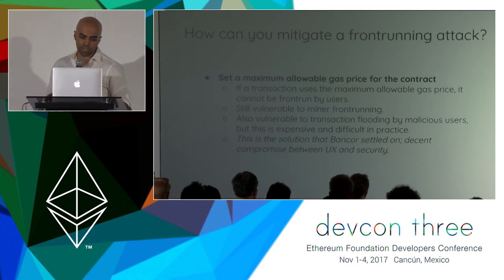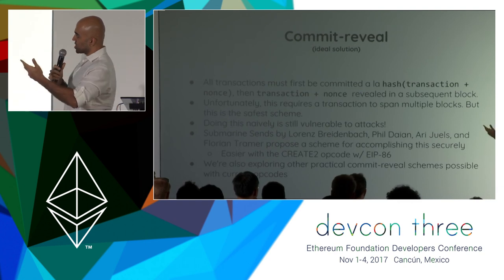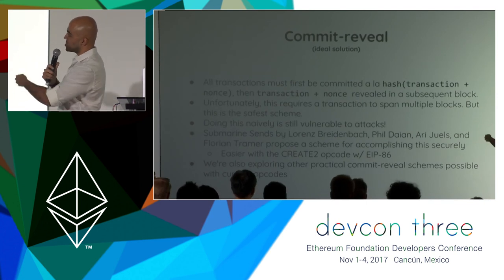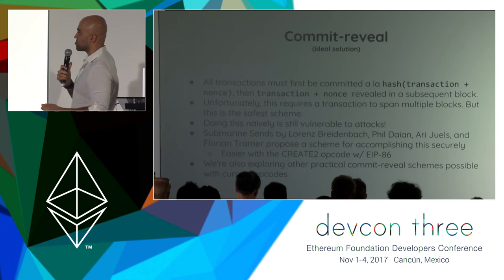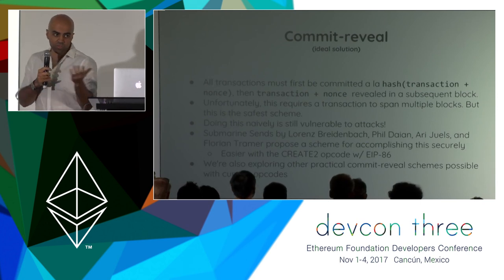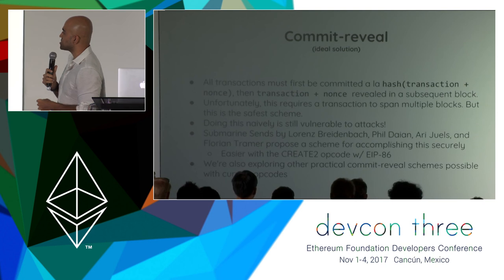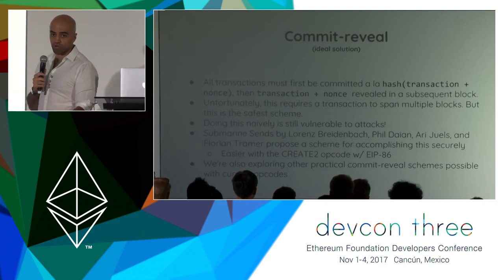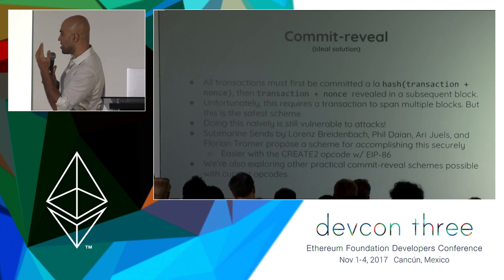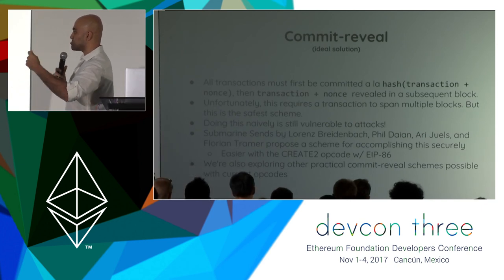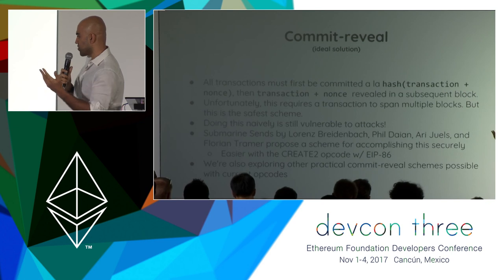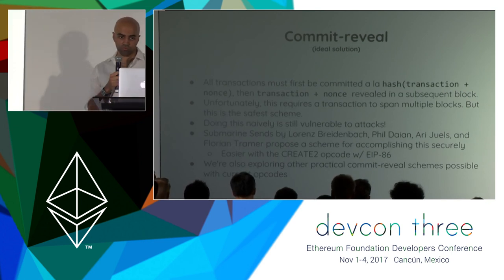Everything still happens in one transaction with just a few extra parameters. The ideal solution would be some form of commit reveal — well-known for voting schemes. In a commit reveal, you first commit to the transaction you're going to make by sending a hash of the transaction plus some nonce, then reveal the transaction and nonce in a subsequent block. Unfortunately, this requires spanning multiple blocks to make a trade, which is slow and undesirable UX. Submarine Sends, worked on by Lorenz Breidenbach, Phil Dain, Ari Juels, and Florian Tramèr, proposed a scheme for accomplishing this securely — which is a lot easier with the Create2 opcode offered by EIP-86, which is not coming out in Metropolis unfortunately. We're also exploring other practical commit reveal schemes possible with current opcodes.